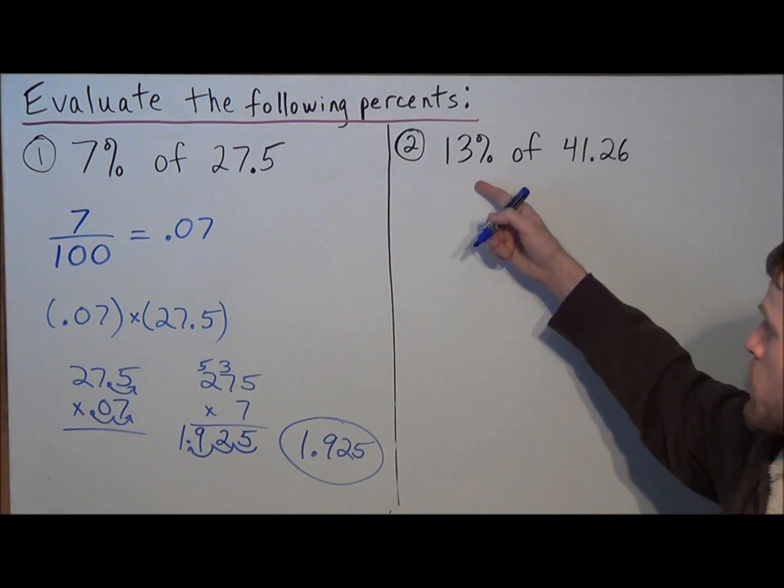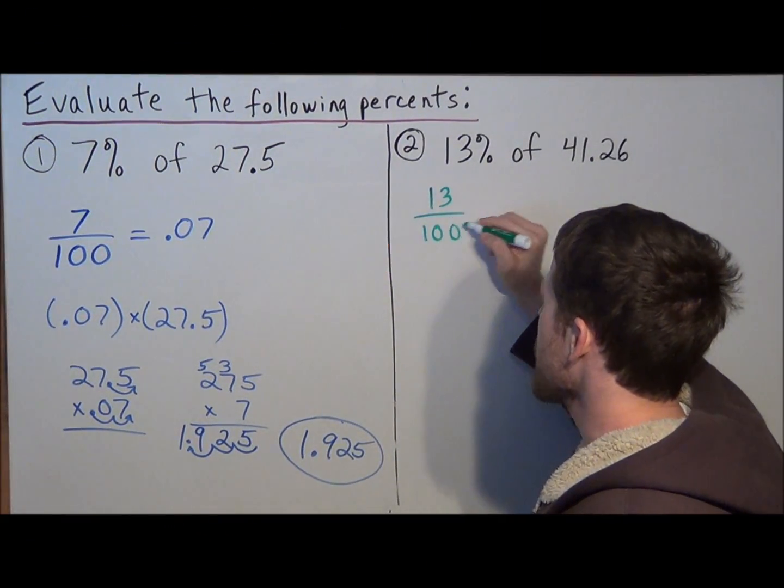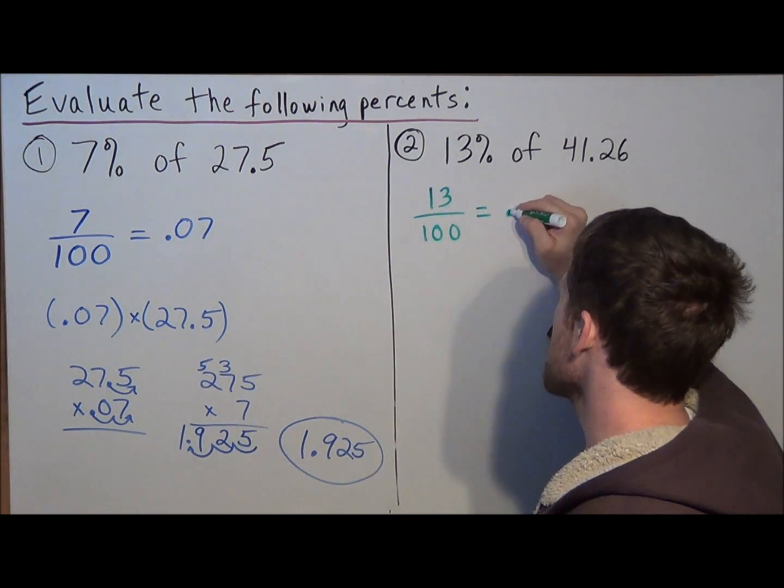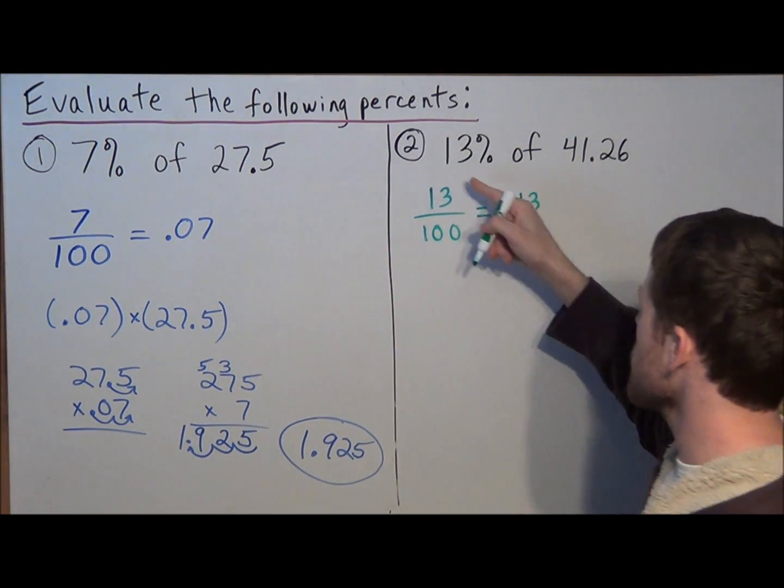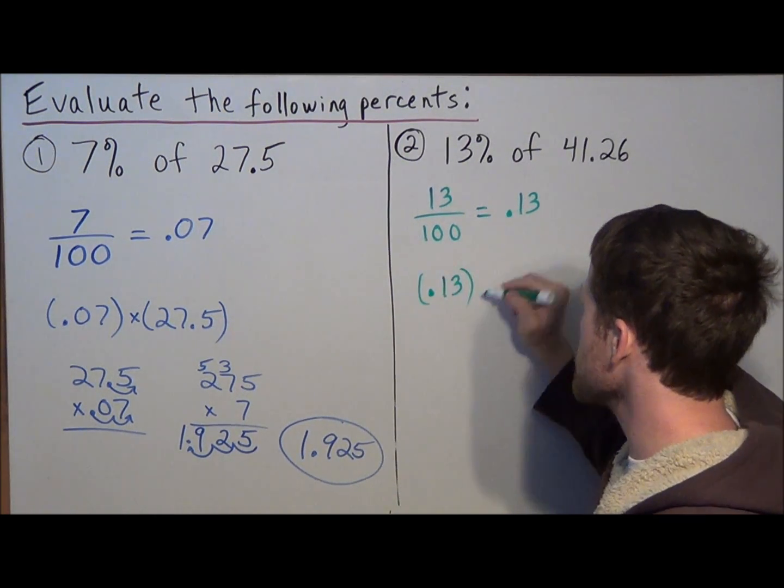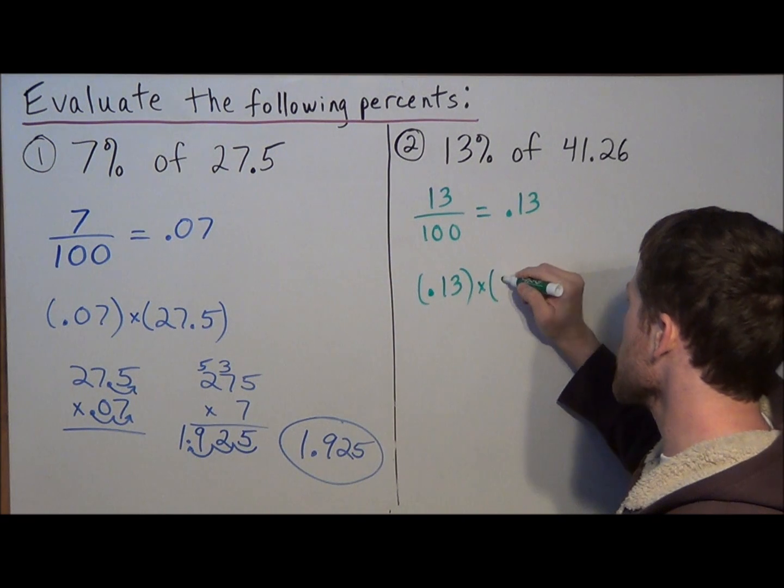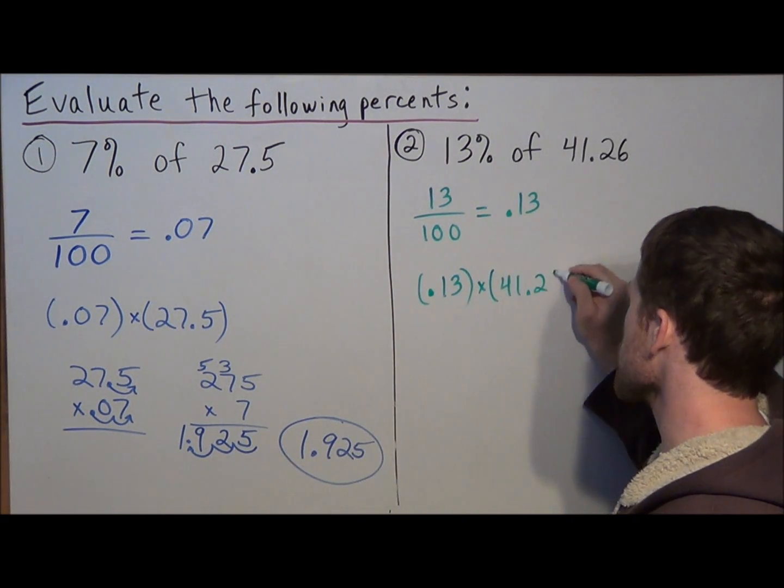So for the second example, we're going to do the same thing. 13% we could write it as 13 out of 100, which as a decimal equals .13. So once again we translate: we have .13, that's 13%. 'Of' tells us to multiply, and we're multiplying 41.26.